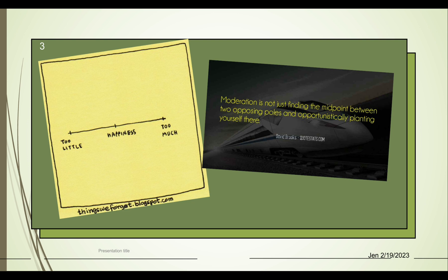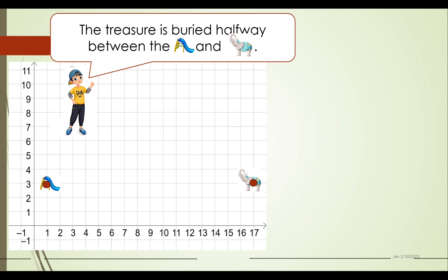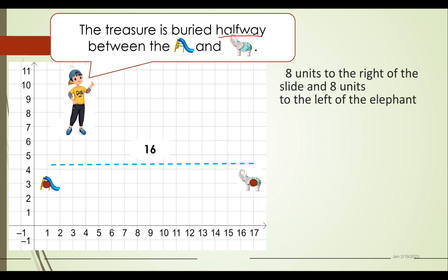We start with the question: where is the treasure? The treasure is buried halfway between the slide and the elephant statue. In this coordinate plane, you can see the location of the slide as well as the elephant statue. Counting the whole distance between them, we get 16. Since the treasure is halfway, it is found eight units to the right of the slide and eight units to the left of the elephant.